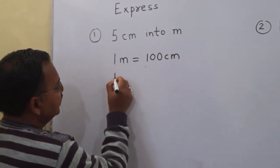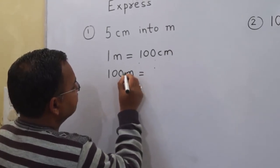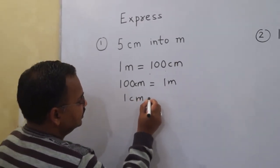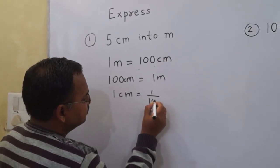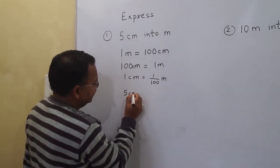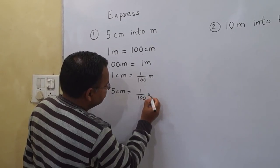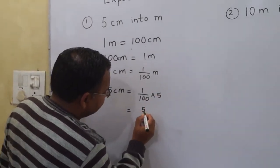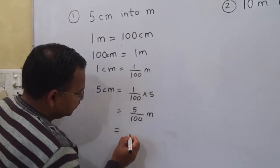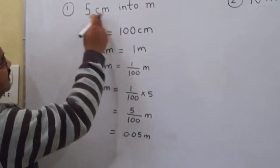So 100 centimeters is equal to one meter, which means one centimeter is equal to one upon one hundred meter. We have five centimeters, so five centimeters is equal to one upon one hundred into five, that is five upon one hundred meter.